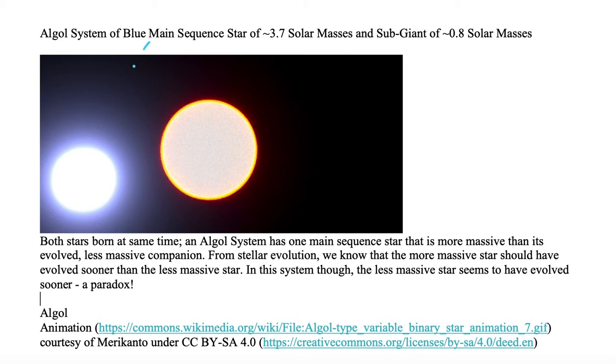On the left, we have a blue main sequence star, and in blue lettering, I'm going to label it M-sub-S. I'm also going to call it M-sub-2, indicating that it's the secondary star. This particular secondary star has a mass of 3.7 solar masses. So, I'll write in blue lettering 3.7 M-sub-Sun.